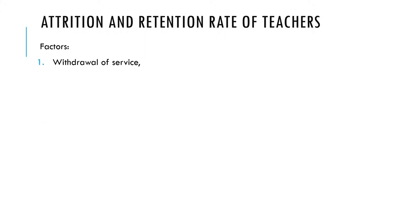One of such factors is withdrawal of service. Some teachers may decide to withdraw their service, probably because they have a better opportunity elsewhere, and join another service. Another thing is resignation — some teachers may decide to resign totally from the system. And another is dismissal: sometimes it is the employer that may wish to dismiss the teacher, and when this happens, it affects the availability of teachers in the school.